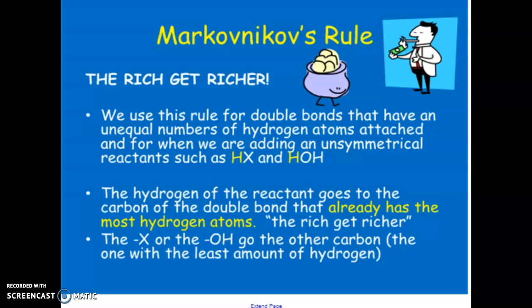What this means is that essentially the carbon that already has more hydrogens in comparison to the two—when you're breaking a double bond, it's always between two carbons—so when you're looking at them, you're going to say, which of the carbons has more hydrogens compared to each other?